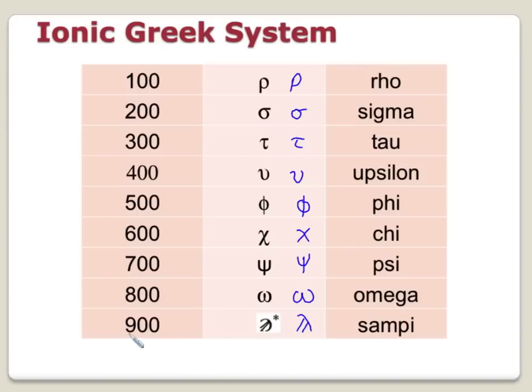Now you might think, well, do they keep going? Are these guys that crazy that we would do another symbol for 1,000? Well, at this point, they actually stop and they use a little symbol for multiplication. So for 1,000, they would write alpha prime. Okay, so that little prime means times 1,000. So if you have to go into the thousands, you're just going to use this right here.